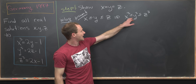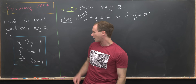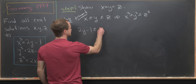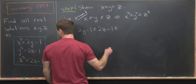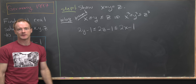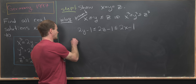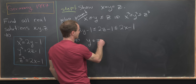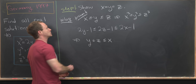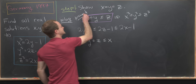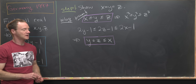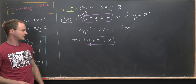We can replace x cubed, y cubed, z cubed with the right-hand side of this system of equations. So that tells us that 2y minus 1 is less than or equal to 2z minus 1, which is less than or equal to 2x minus 1. Adding 1 to all parts and dividing by 2, that leads us to y is less than or equal to z, which is less than or equal to x.